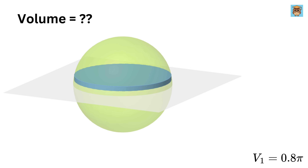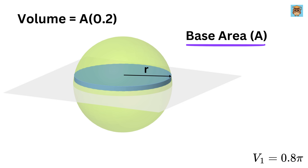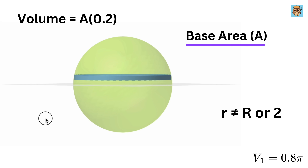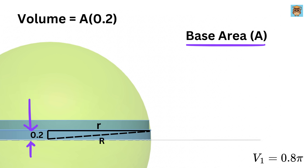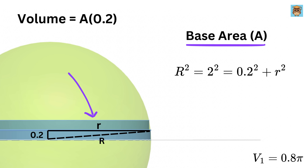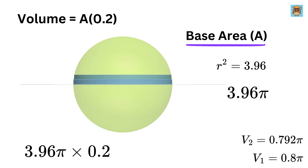Now consider the second disk. Its volume is again the area of its base times the thickness of 0.2. To find the area we need the radius of this disk, which is not equal to the radius of the hemisphere. Using Pythagoras theorem on the right triangle formed, the hypotenuse is the hemisphere radius 2, and the vertical leg is 0.2. So small r squared equals 2 squared minus 0.2 squared, giving small r squared equals 3.96. The area of its base is 3.96pi, and the volume is 0.792pi.